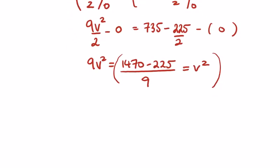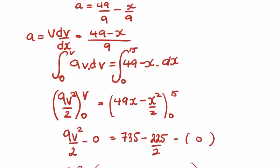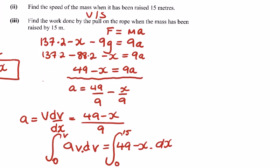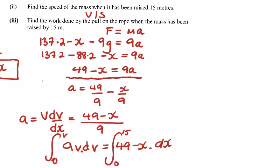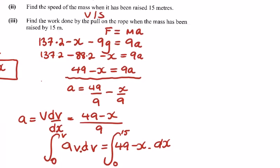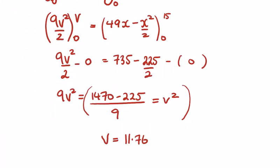You're not going to do this in an exam, just type that into a calculator. v equals the square root of that, so v equals 11.76. It doesn't say, so we'll write it to 2 decimals. Meters per second. And then the work done.